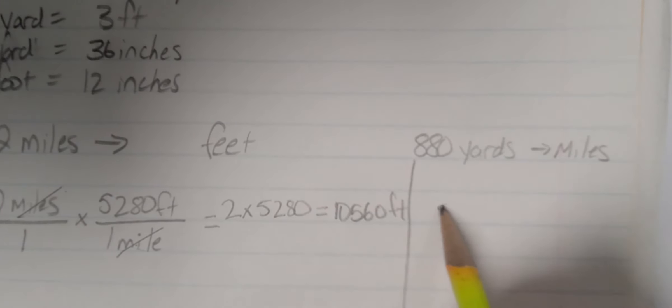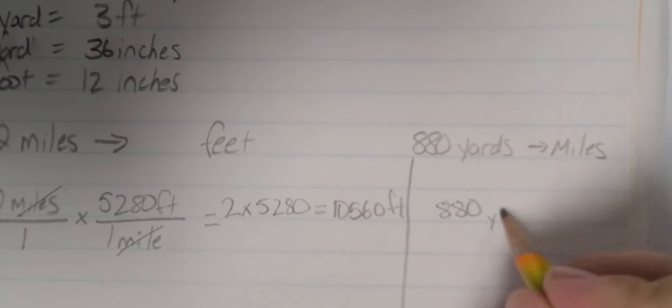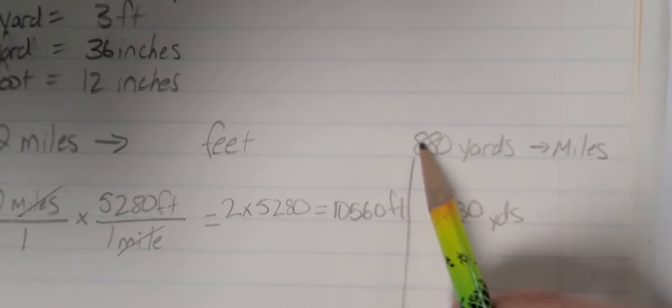So I need this one to have 880 yards. Now, I want to divide this, because if I'm going from a smaller unit to a bigger unit, I need less of them, so I have to group them together. That's what division is for. It's for grouping.